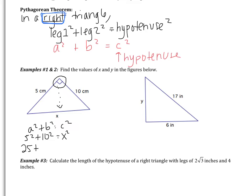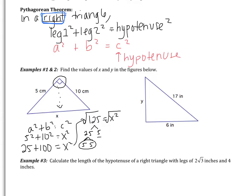5 squared is 25, and 10 squared is 100, giving x squared. This simplifies to 125 equals x squared. To get rid of the squared, I take a square root. I have to break down 125 — you are not allowed to leave this as a decimal. 125 is 25 times 5, and 25 is 5 times 5. So I have a pair of 5s and one 5 left over. One 5 comes out of the pair, and the leftover 5 stays under the root. So x is 5 root 5 centimeters.